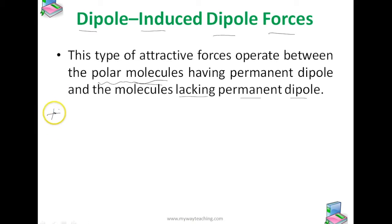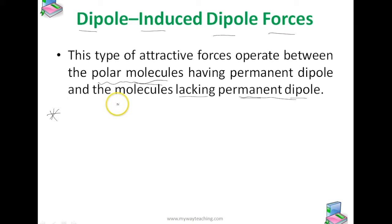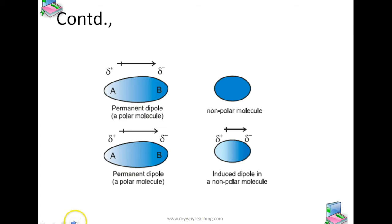The permanent dipole of the polar molecule induces a dipole on the electrically neutral molecule by deforming its electronic cloud, as shown in this figure. This is the permanent dipole of the polar molecule, and this is the non-polar molecule. Thus, an induced dipole is developed in the other molecule.